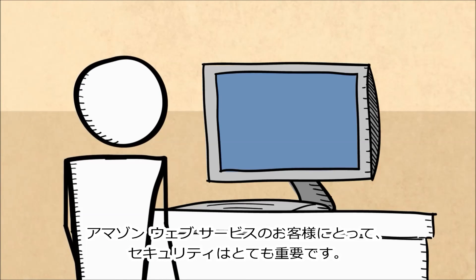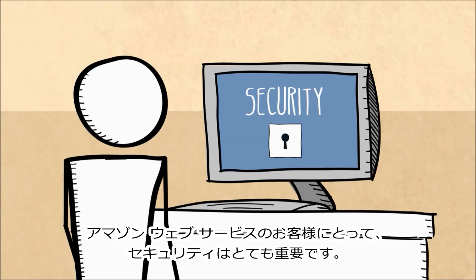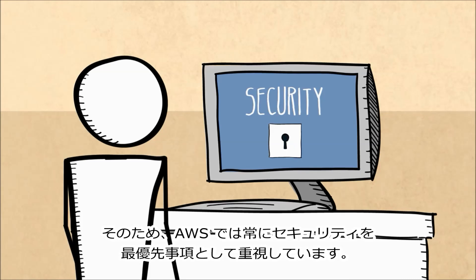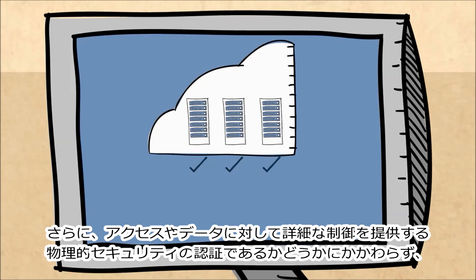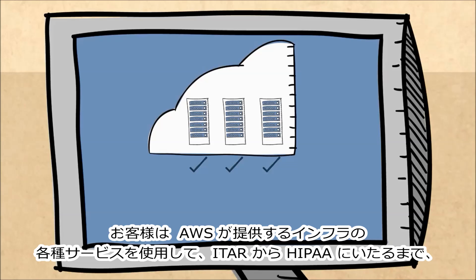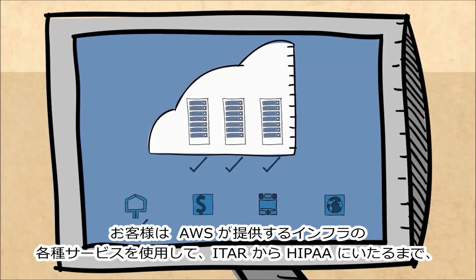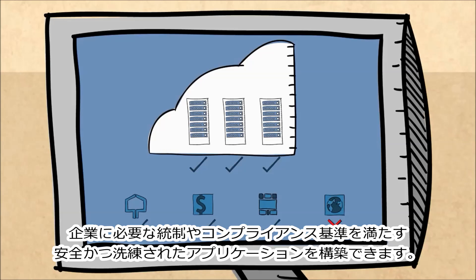We know that security is very important for Amazon Web Services customers, so we have always focused on security as a top priority. In addition to physical security certification, to providing fine-grained access and data locality controls, AWS provides the infrastructure building blocks so you can build sophisticated, secure applications which meet the regulatory and compliance standards your business requires, from ITAR to HIPAA.